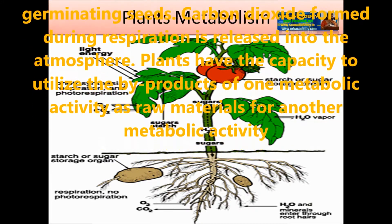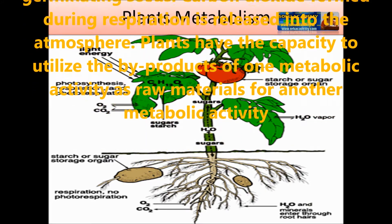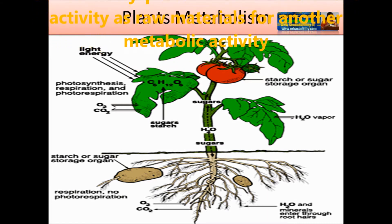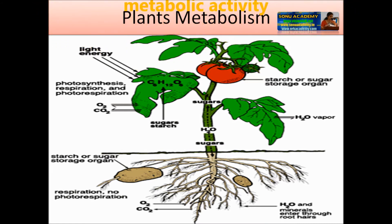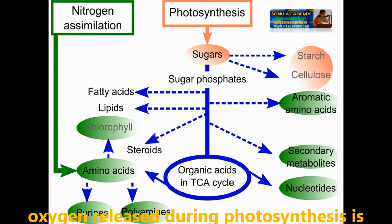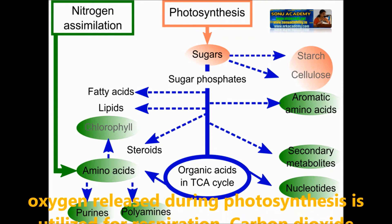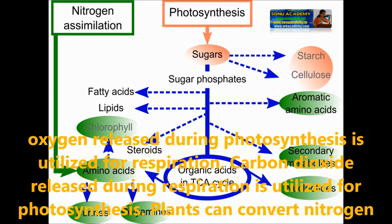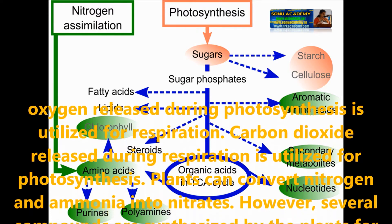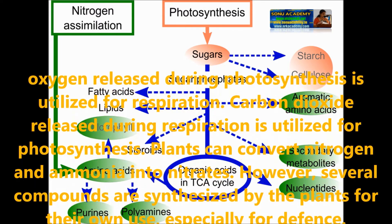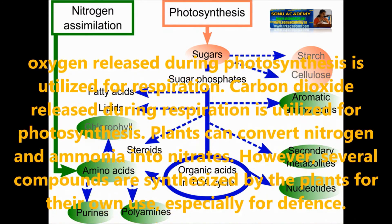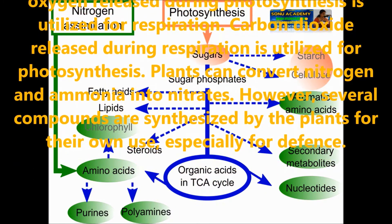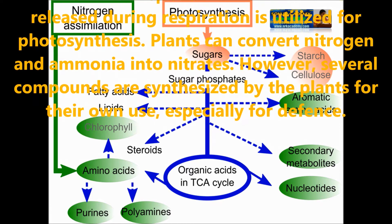Plants have the capacity to utilize the byproducts of one metabolic activity as a raw material for another metabolic activity. For example, oxygen released during photosynthesis is utilized for respiration, and carbon dioxide released during respiration is utilized for photosynthesis. Plants can also convert nitrogen and ammonia into nitrates.